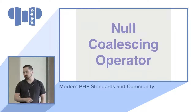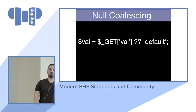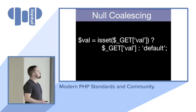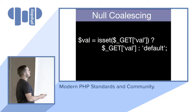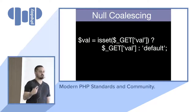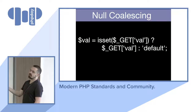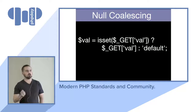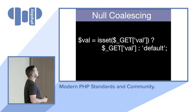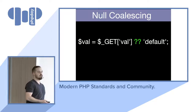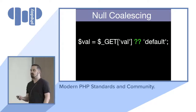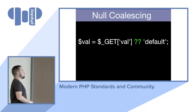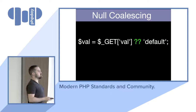We also have the null coalescing operator. In the past you had to do a ternary: if this is set, use it, else use this default. Now with null coalescing you can just use the double question mark — it says if a value is set use it, otherwise fall back to this default. This comes in really handy in views or when defining data you want to pass to views.